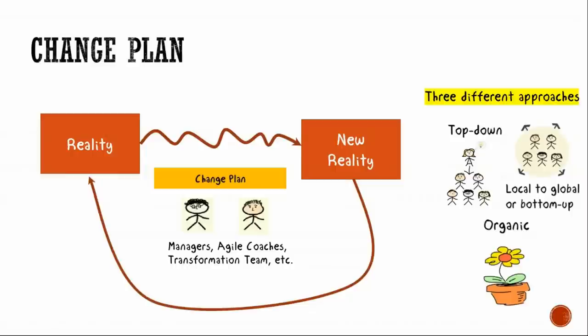Finally, there is the organic option — you implement something very small and when you finish, implement something else. For example, imagine implementing stand-ups first, then the retrospective, adding little processes until you complete the whole. After you implement a new process and see it worked, you continue with the next one — like baby steps. These are the three main different approaches you can use to go through the change loop.